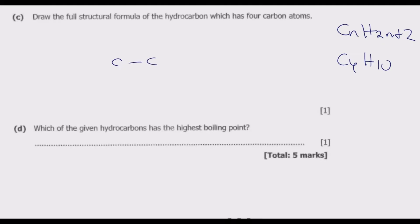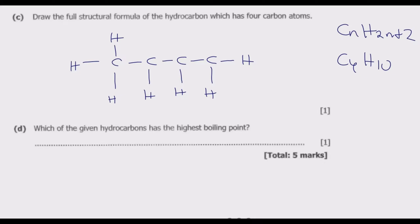To draw the structure, we place the four carbon atoms in a chain: C-C-C-C, and then attach hydrogen atoms to each carbon so that all bonds are satisfied. Alkanes do not have double bonds between carbon atoms because they are saturated. In contrast, alkenes are unsaturated and hence they have double bonds somewhere in the chain.